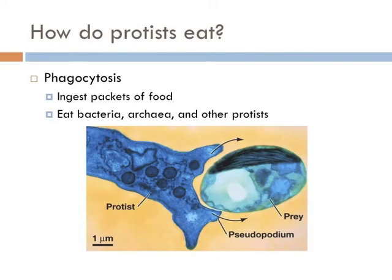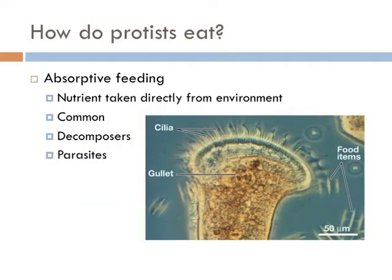One way protists eat is known as phagocytosis. In this process, protists wrap their bodies around a prey and release digestive juices, then break down their prey into molecules used for cellular respiration. Protists most commonly eat through absorption — a form of consumption where nutrients are taken directly from their environment. This is most common in organisms such as decomposers, which decompose dead organisms, or parasites, which live inside organisms and feed off of them.